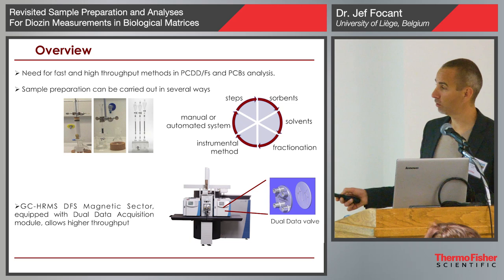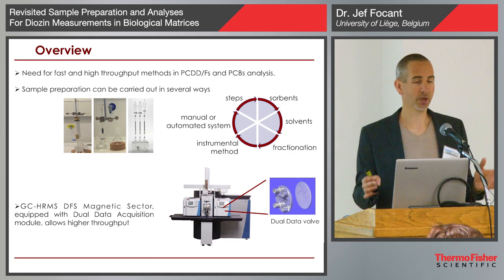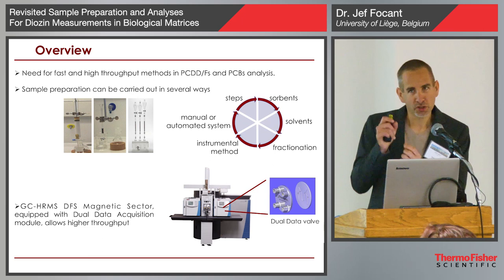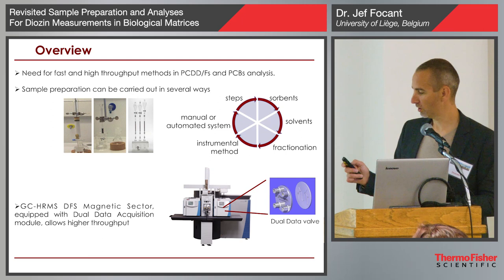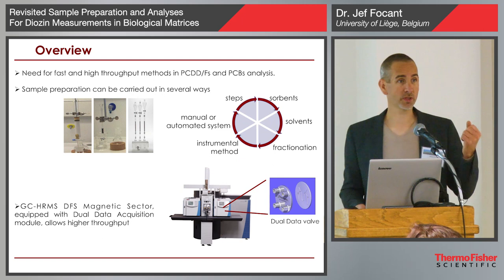Every time we're going to have to decide: manual sample prep or automated sample prep, because you will have to go through sample prep. You cannot just take your meat sample or your serum sample and push it in a little microsyringe and inject that to your GC. You can try, but it will not go far in the GC column, hopefully.